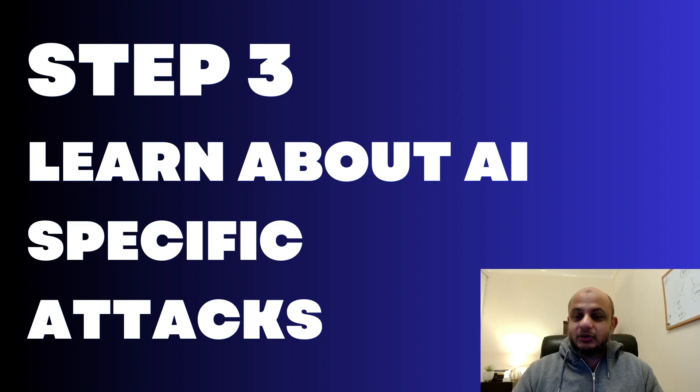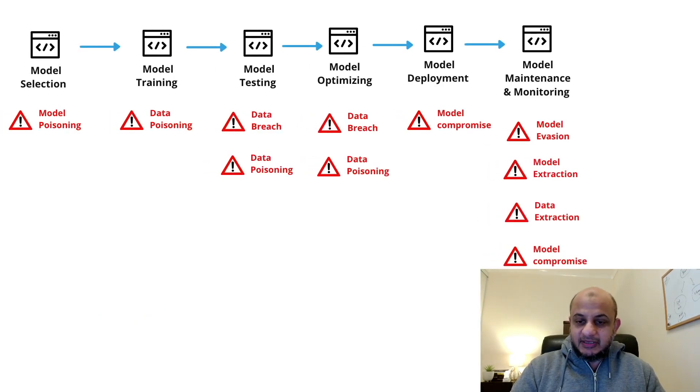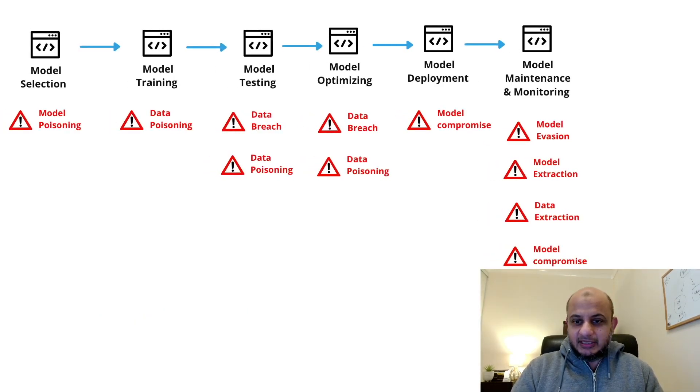Application security started happening at a new layer, the level seven application layer, and we were simply not ready. This is the same thing which is happening now. So now we have the application layer protected with things like web application firewalls, source code review. But now we are adding another layer on top of that which is AI, machine learning algorithms. And that's why new types of attacks are happening, which is leaving people confused. What are these sort of attacks? That's why it's so important for you to understand about AI specific attacks. AI has a life cycle. You choose a model, you train that model, you test that model, you optimize that AI model, deploy it and then maintain it. And attacks can happen at any layer.